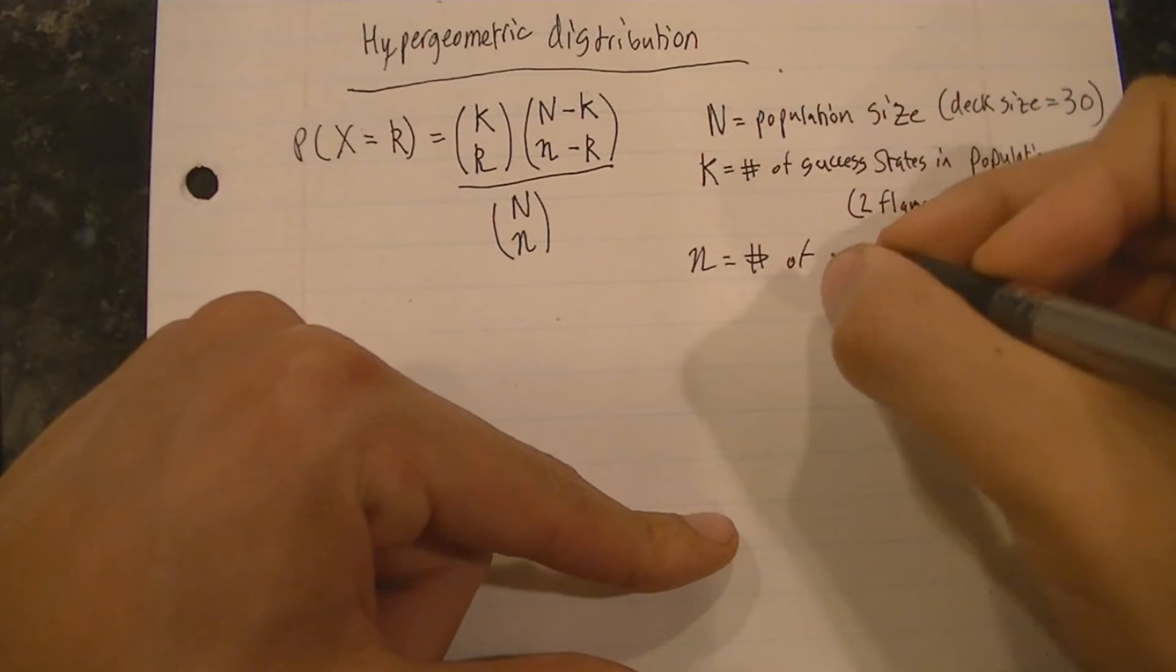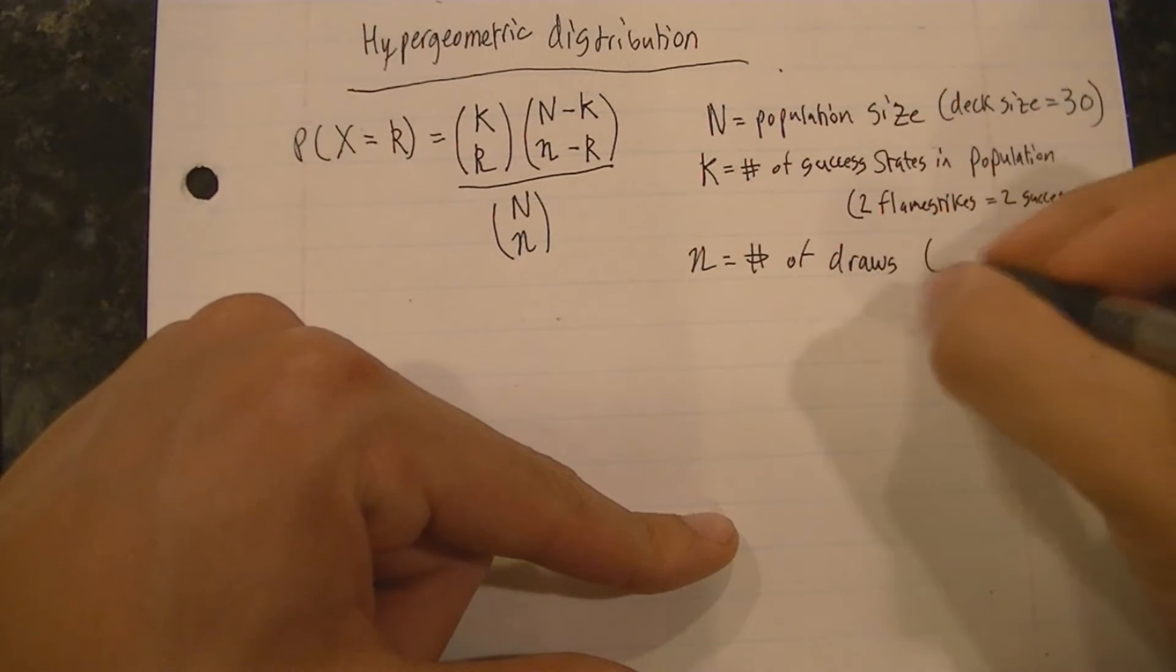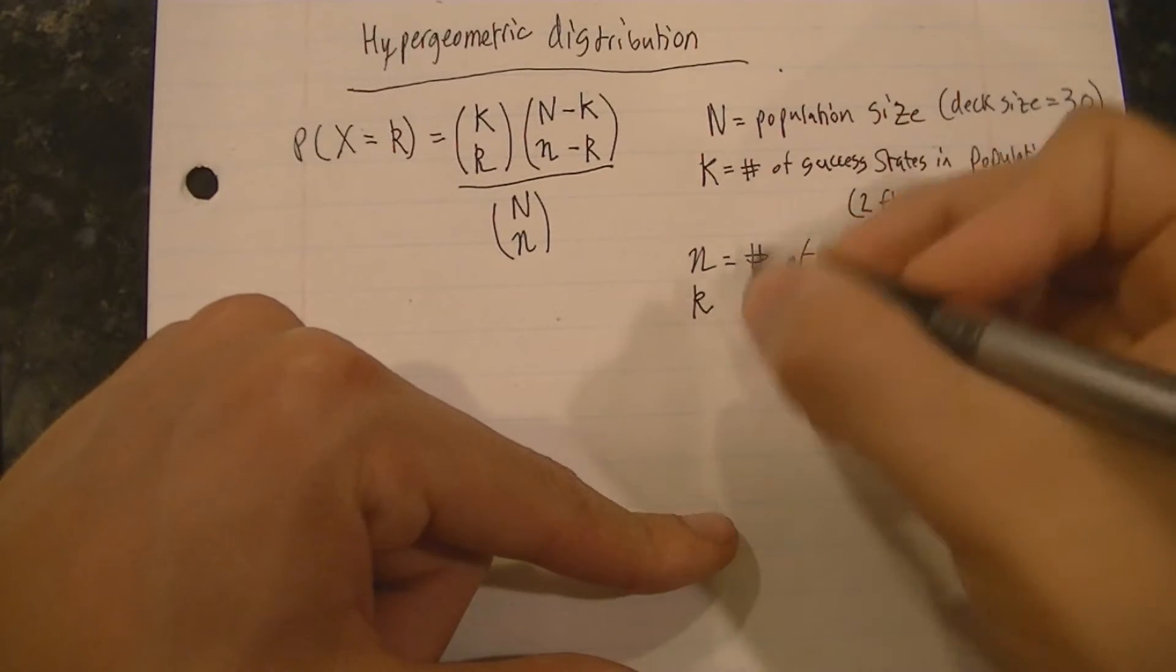Lowercase n is the number of draws we have done so far, so in our case it would be 11 draws because we have drawn 11 cards by now.